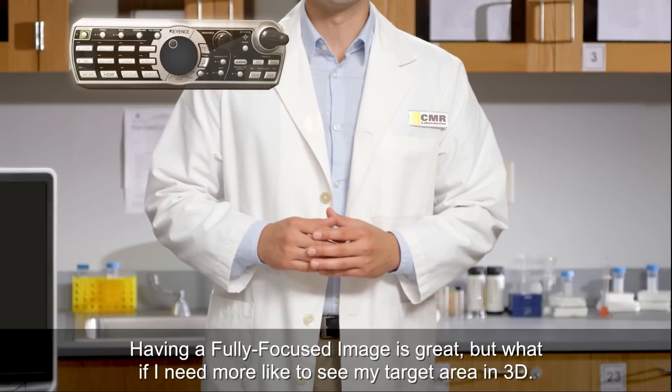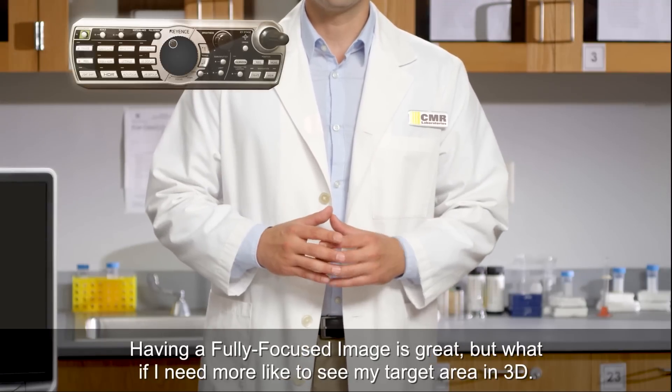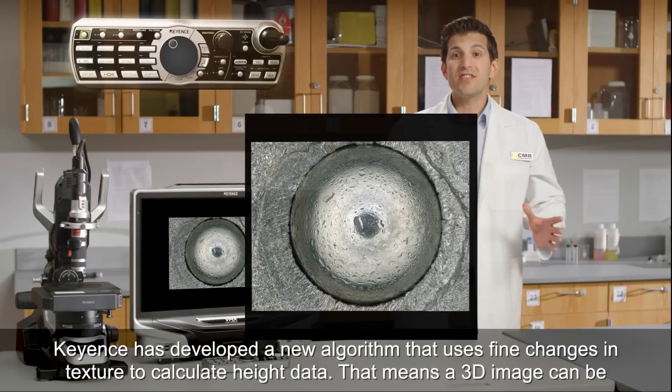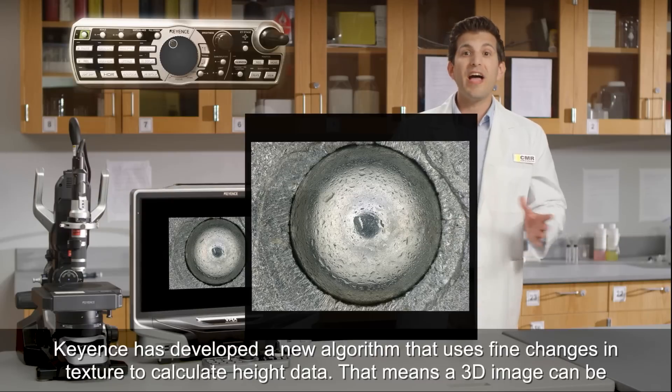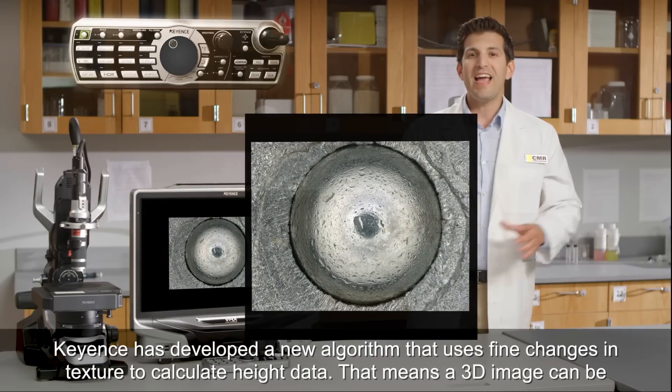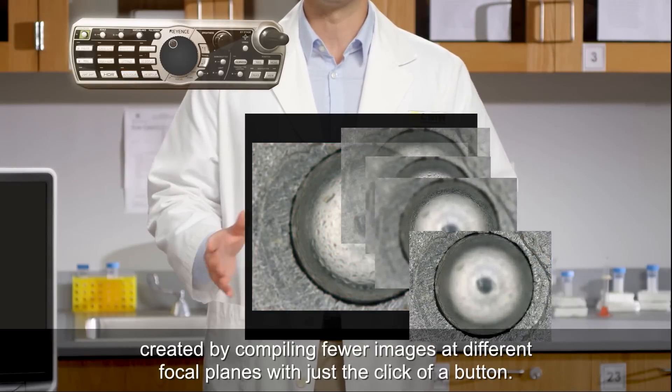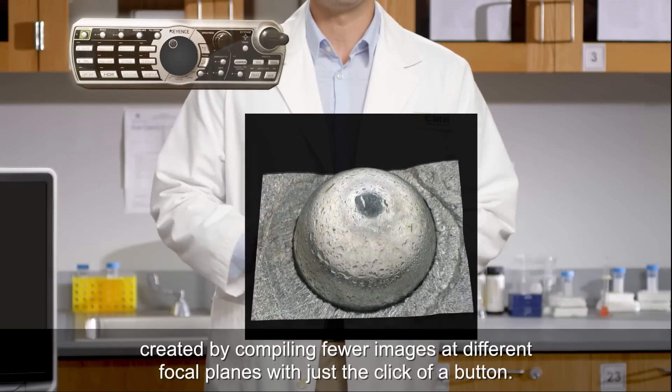Having a fully focused image is great, but what if I need more? Like to see my target area in 3D. The VHX5000 has you covered. Keyence has developed a new algorithm that uses fine changes in texture to calculate height data. That means a 3D image can be created by compiling fewer images at different focal planes with just the click of a button.